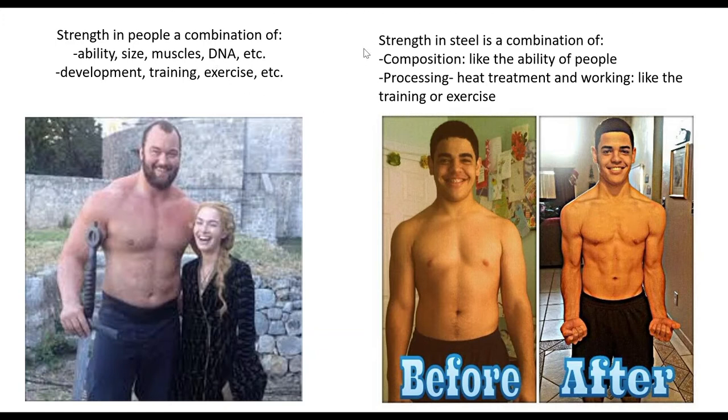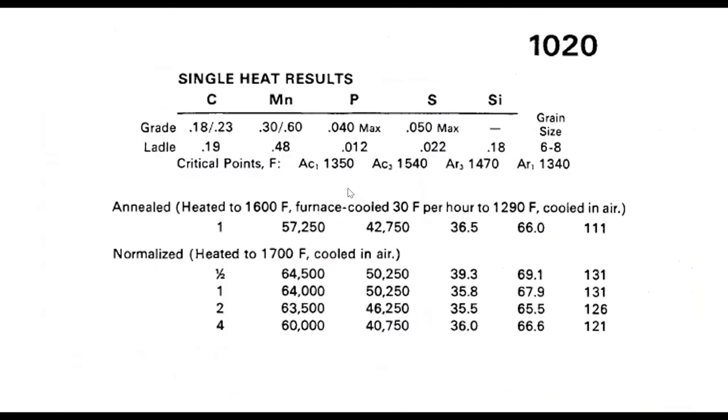So if we look at steel, whether you're the mountain or this kid is your chemical composition. And then whether you're flabby or strong is really a matter of processing. So heat treatment is how we take an alloy that's not very strong and make it as strong as we can make it.